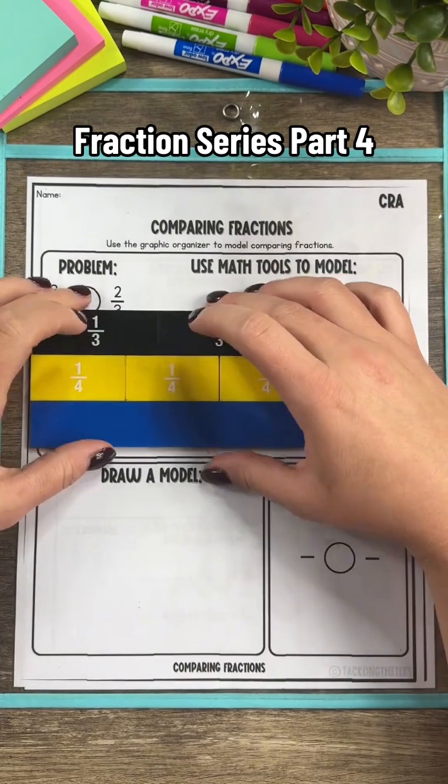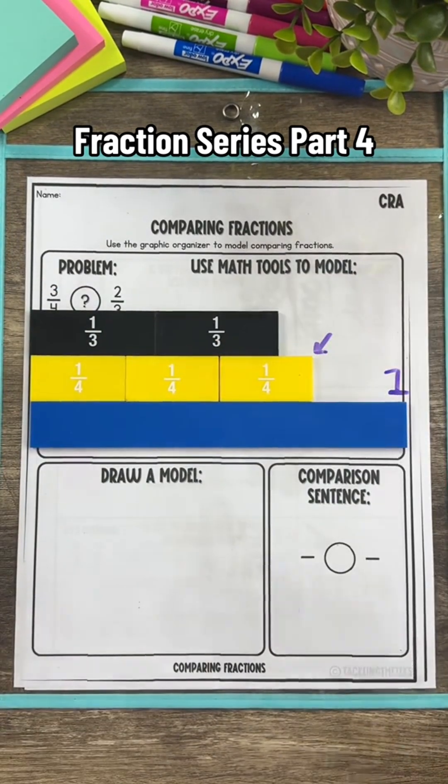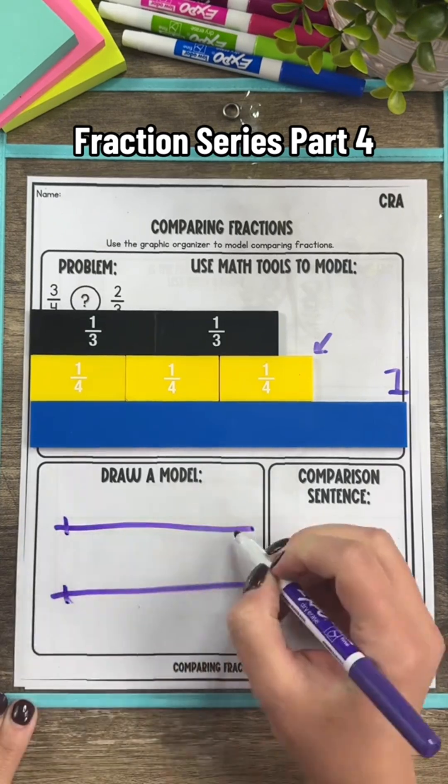Let's represent comparing three-fourths and two-thirds. Here I can see that three-fourths is a lot closer to one whole than two-thirds.